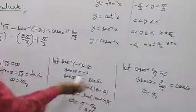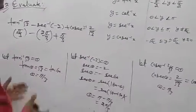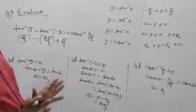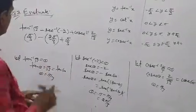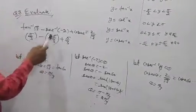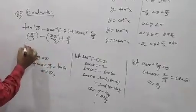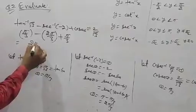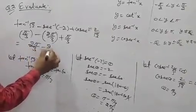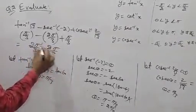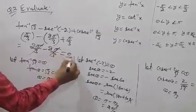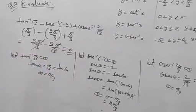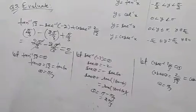With these principal values — pi by 3 minus 2pi by 3 plus pi by 3 — the calculation gives pi by 3 plus pi by 3 minus 2pi by 3, which equals 2pi by 3 minus 2pi by 3, equals zero. So zero is the answer.